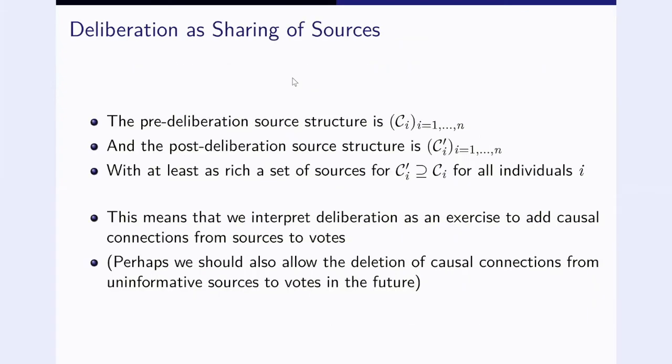We then get a link from C1 to V2 as well, and from C1 to V3, and so on. In this case here, there is complete sharing in the post-deliberation situation. And that's really the basic idea. The basic idea is deliberation increases the sharing of the informative sources. The pre-deliberation source structure is the CI for the different individuals, and the post-deliberation source structure is C stroke I, for the different individuals with the different votes, and with at least a set of sources after deliberation than prior to deliberation. This means we interpret deliberation as an exercise to add causal connections from sources to votes.